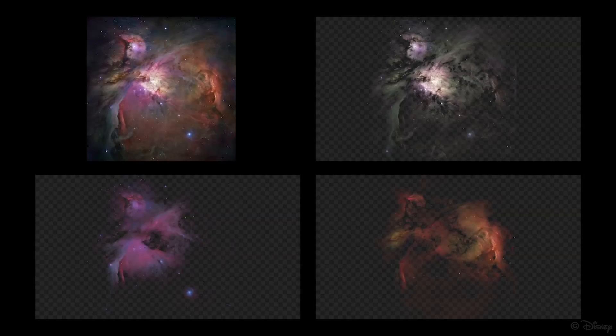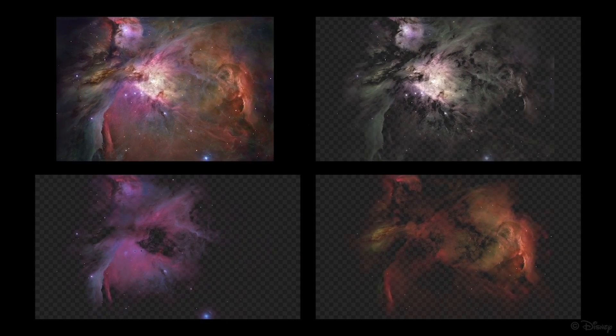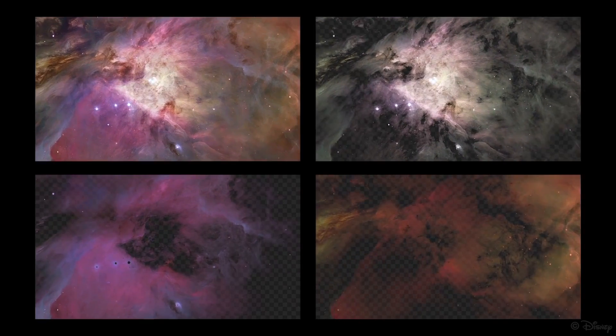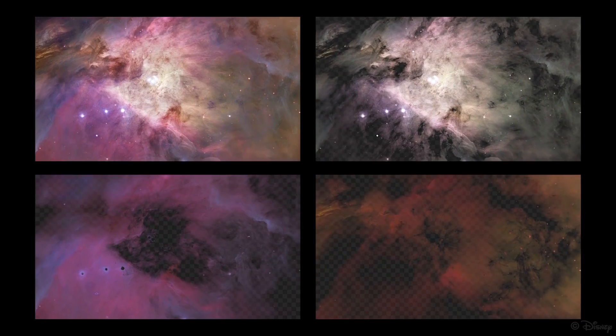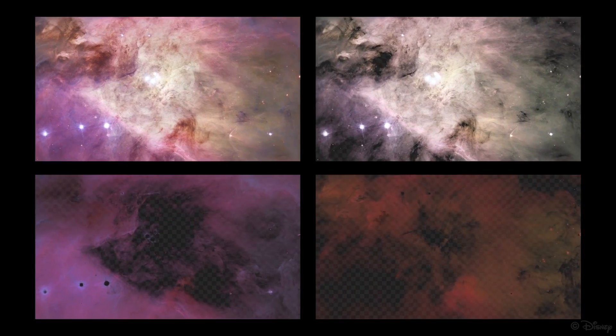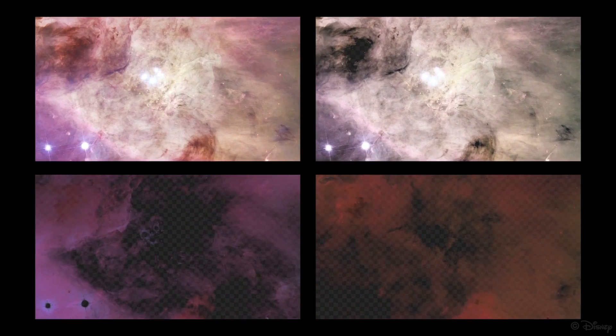Our algorithm is highly scalable and parallelizable. We process this 100 megapixel image on a desktop computer in four hours using up to 25 gigabytes of memory. Note that within the same time budget, KNN matting can only process a 2.5 megapixel image.